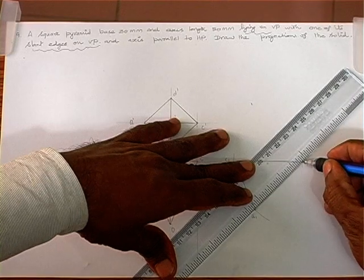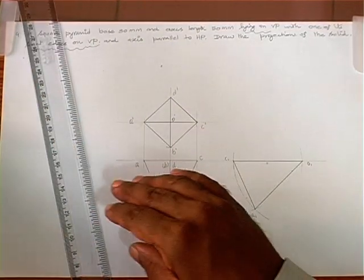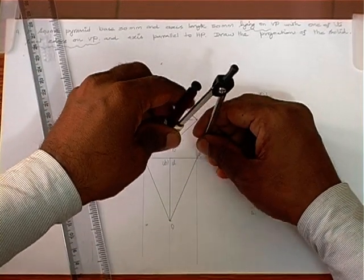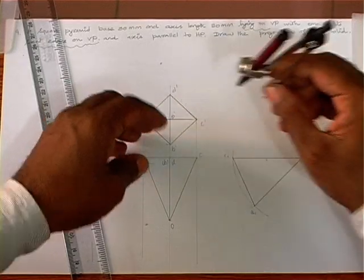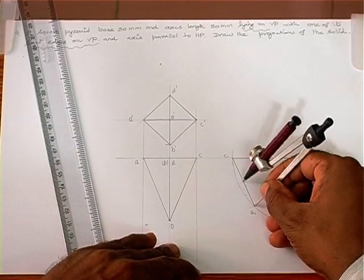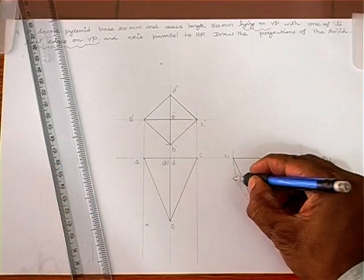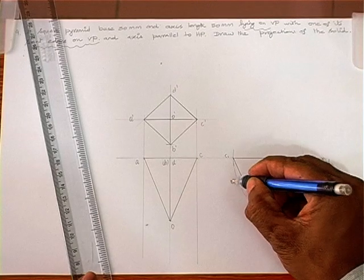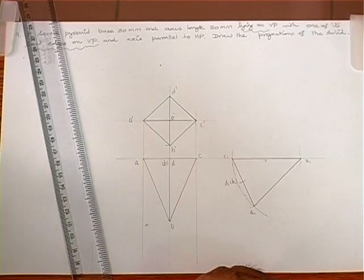The across-corner distance has one more division for locating points B and D. From any corner we mark this and find B1 and D1 (in brackets). We join B1 and D1 with O1.